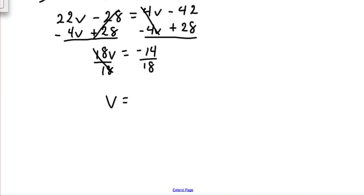We have to simplify this fraction. In order to simplify the fraction, what we're going to do is divide both the top and the bottom by a 2. We'll bring over the negative sign. 14 divided by 2 is 7, and 18 divided by 2 is 9. So we get that v equals negative 7 ninths.